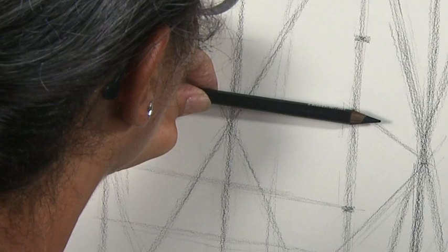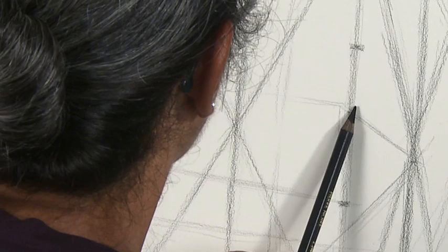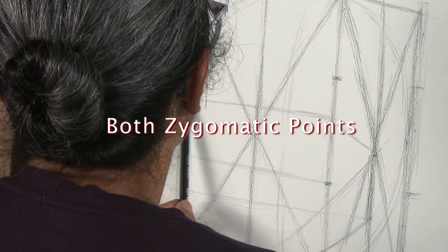Then we will draw an axis from one zygomatic point to the other. Now we have established the location of both zygomatic points.